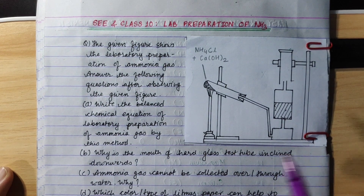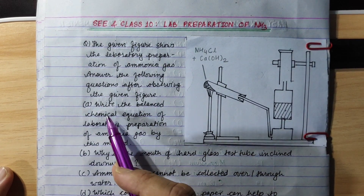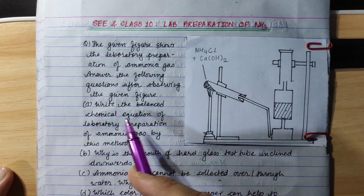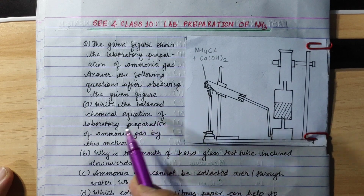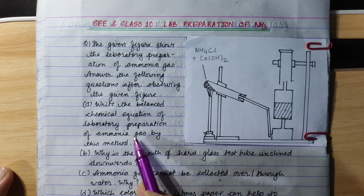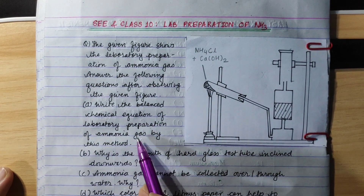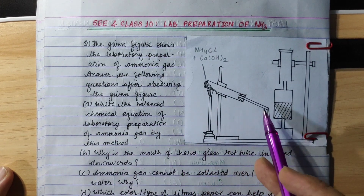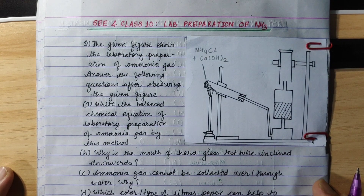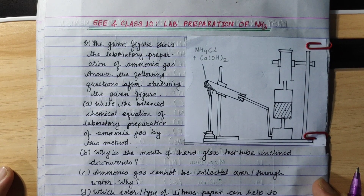First question: Write the balanced chemical equation of laboratory preparation of ammonia gas by this method. This method is used to make ammonia gas. We have the lab preparation chemical equation.